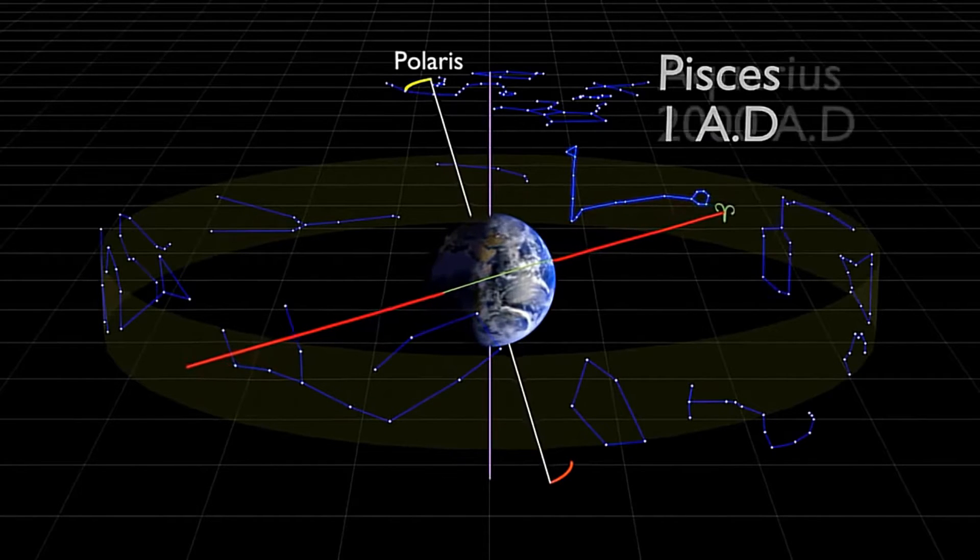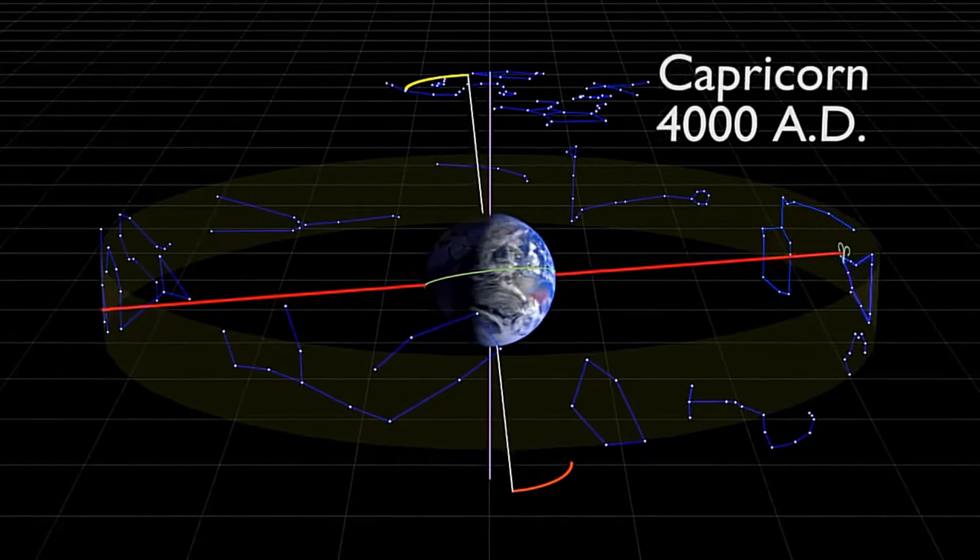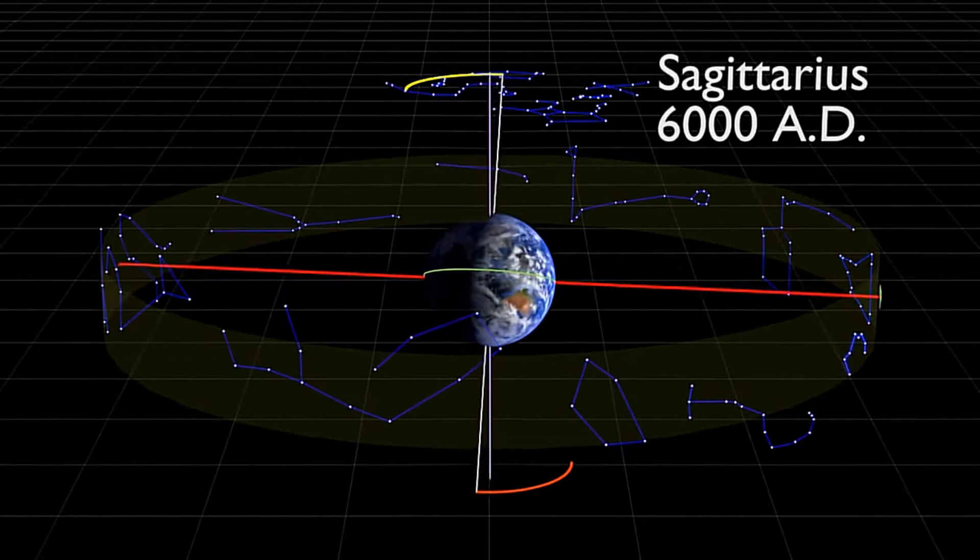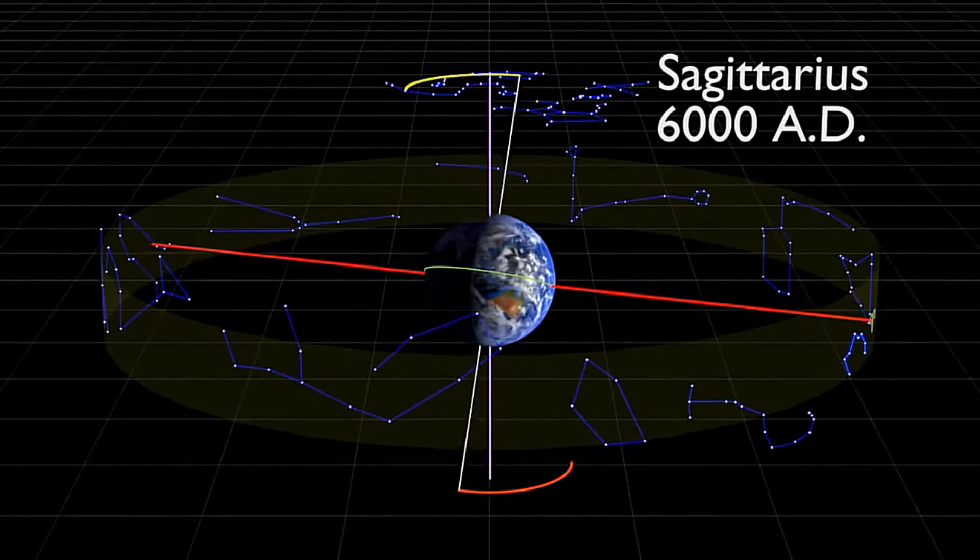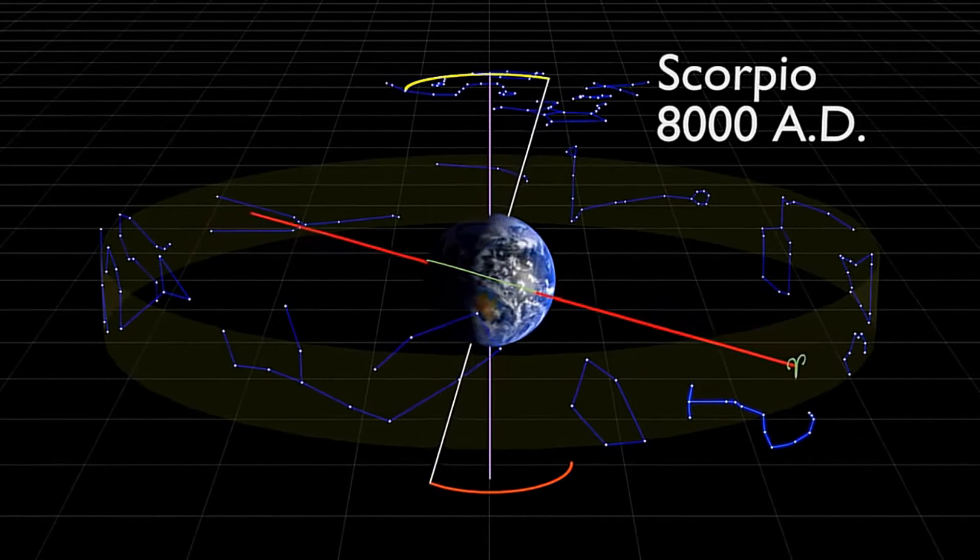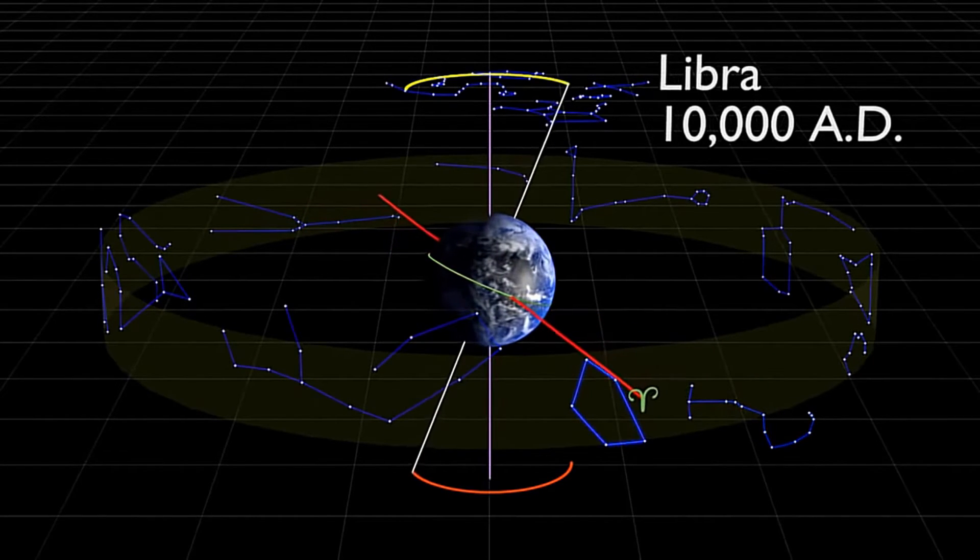Although the Earth is round, it's not a perfect sphere, and it also suffers from the effect of gravitational stresses from the Sun, Moon, and other planets. These gravitational forces cause the Earth to wobble just a little bit in its orbit. One complete wobble takes about 26,000 years.